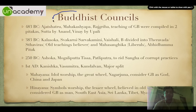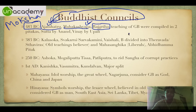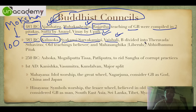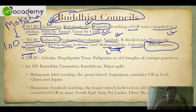Various Buddhist councils are important. First council: 483 BC, the year of moksha, under the patronage of Ajatashatru, with Mahakashyapa as president, held at Rajgriha. The teachings were compiled into two Pitakas — Sutta Pitaka by Ananda and Vinaya Pitaka by Upali. Second council: one hundred years later, under king Kalashoka, presided by Svakarni, at Vaishali. Buddhism split into Theravada (Sthaviravada) — the old teachings believers — and Mahasanghika, the liberals. The third Pitaka, Abhidhamma Pitaka, was also compiled.